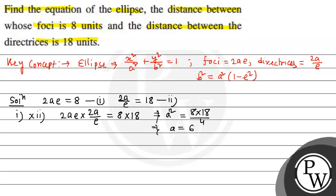Now, what did we get here? We know that 2ae = 8. So 2 × 6 × e = 8. So the value of e = 2/3.